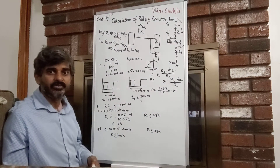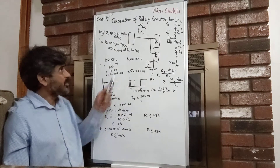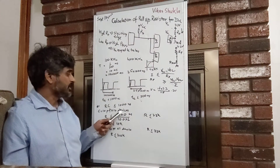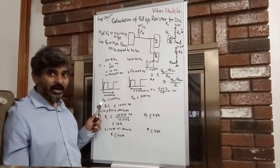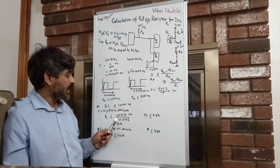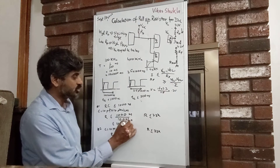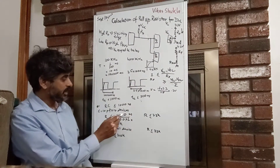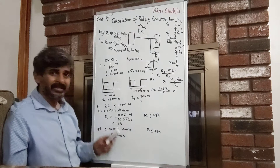Now let's get a feeling of a real-life scenario. We want to keep R × C less than 1000 nanoseconds. In a typical scenario, let's say we have 10 I2C devices each with 10 pF capacitance — or maybe 5 devices each with 20 pF — so the total capacitance adds up to 100 pF. To calculate R to keep the rise time fast, we have R × 100 pF < 1000 nanoseconds. So 1000 × 10⁻⁹ divided by 100 × 10⁻¹² gives R < 10K. So a 10K resistor is appropriate, and in a standard situation with many devices, 10K is a reasonably good value.